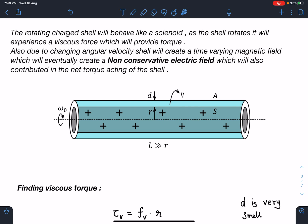Also, due to changing angular velocity, the shell will create a time varying magnetic field which will eventually create a non-conservative electric field, which will also contribute to the net torque acting on the shell. This is the whole philosophy of this problem.